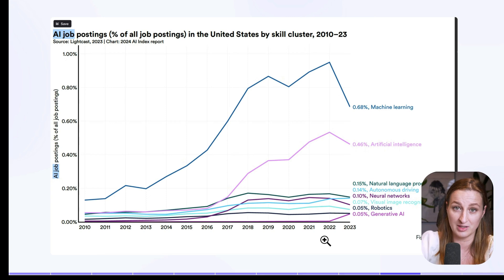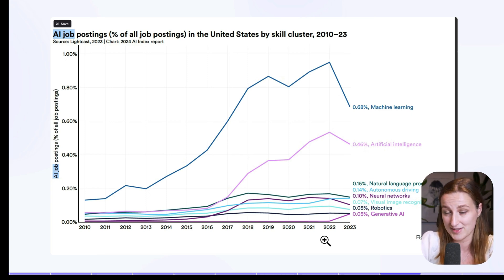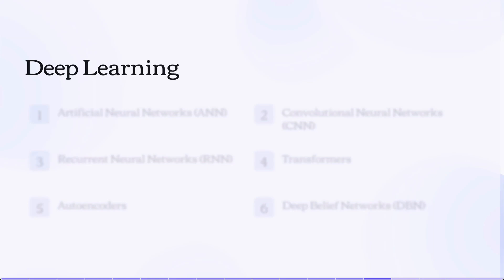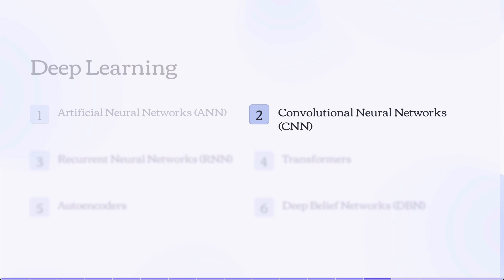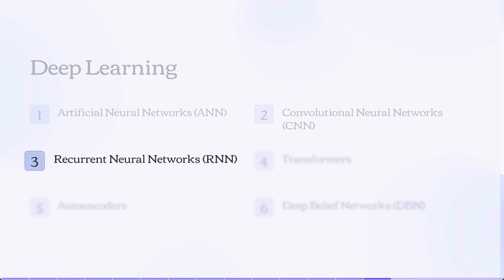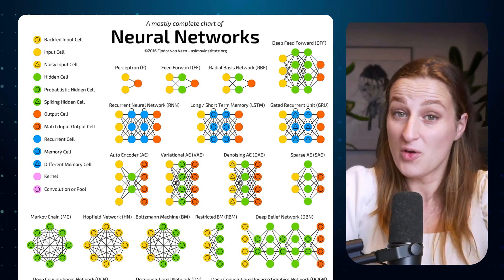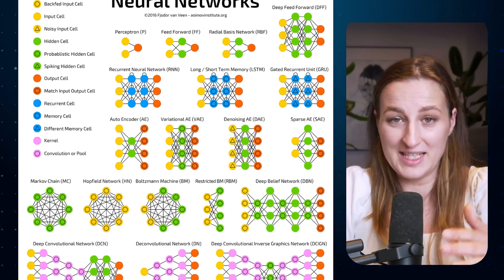To find large language models, we need to look into the subset of machine learning which is deep learning. Within deep learning we have artificial neural networks, convolutional neural networks, recurrent neural networks, and also transformers.